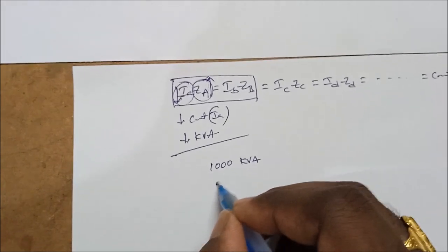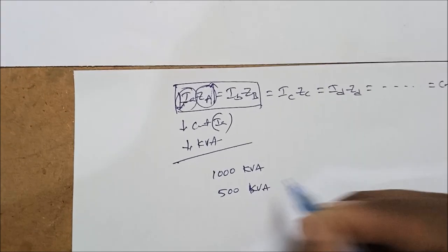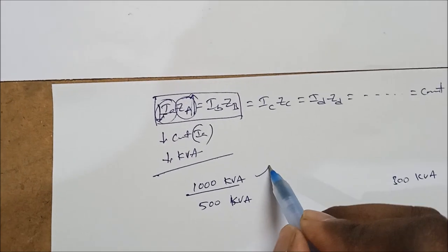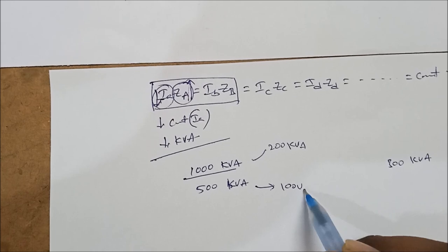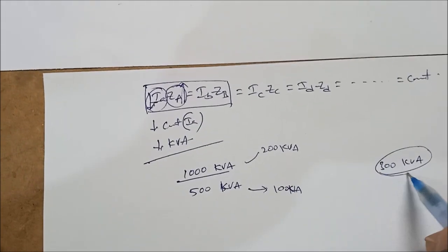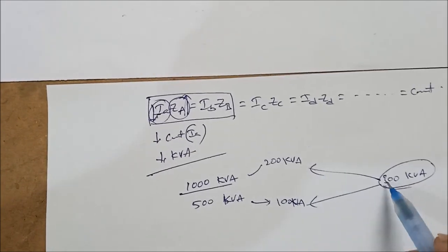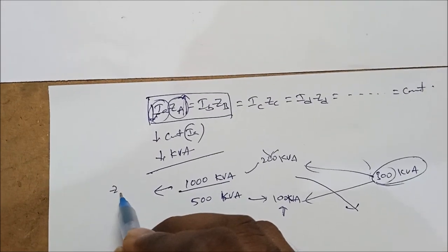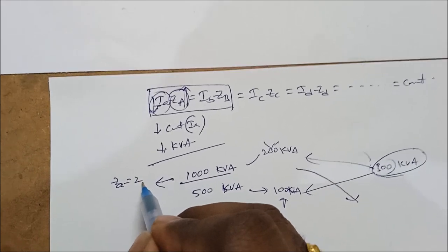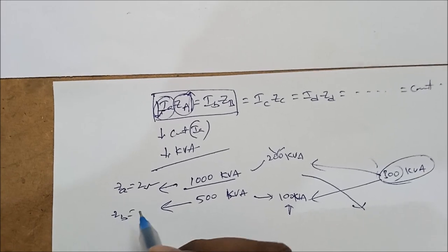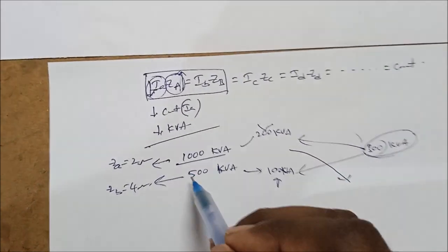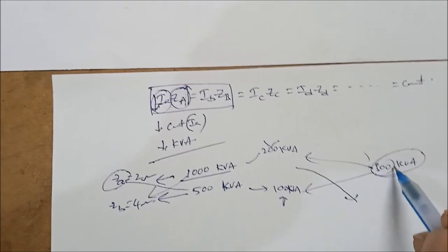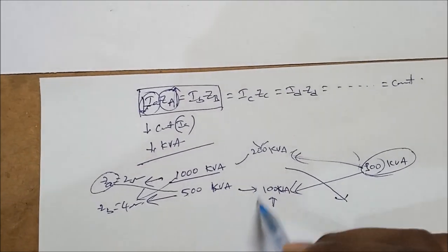For example, if the first transformer is 1000 kVA and the second is 500 kVA, with a total load of 300 kVA, the first shares 200 kVA and the second shares 100 kVA — in proportion to their kVA ratings. If the impedance of the first transformer is 2 ohms, then the impedance of the second should be 4 ohms, since impedance is inversely proportional to kVA rating.